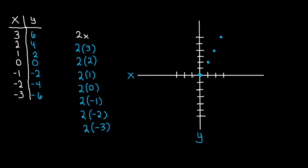If we give them zero dollars they're not going to give us anything back and we won't owe them anything. If we borrow a dollar we pay them back two dollars — so negative one, negative two. Now we have negative two on the x-axis and negative four on the y. And negative three and negative six. This line should be straight — let's try to draw it so it goes through all of our points.